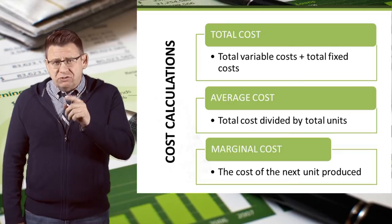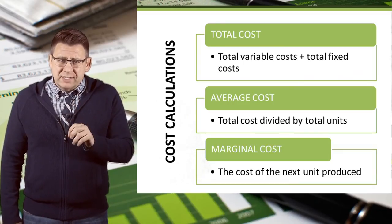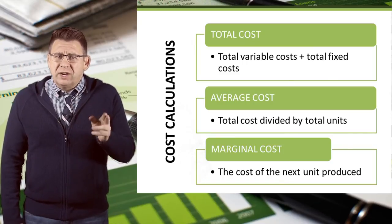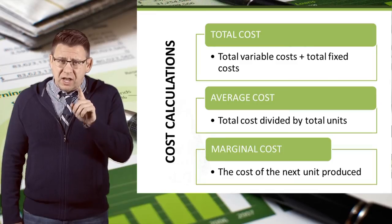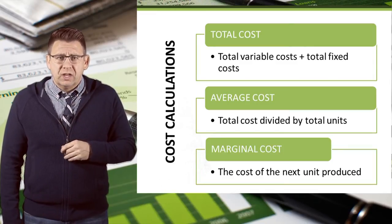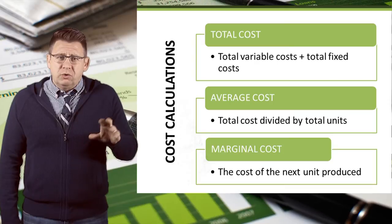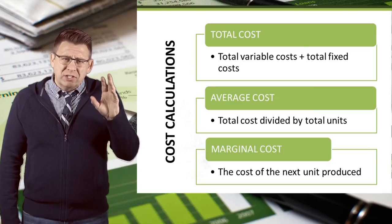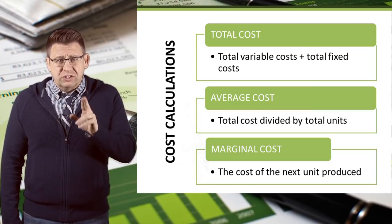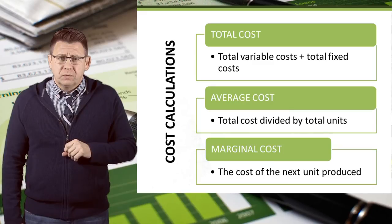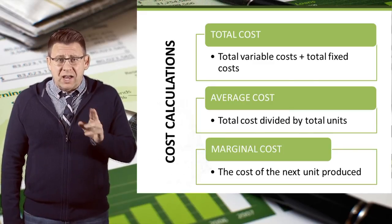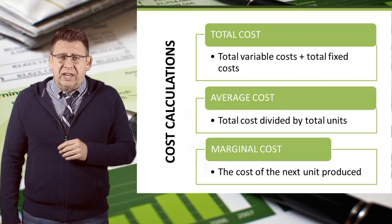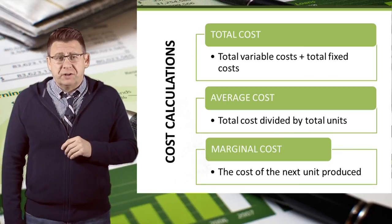Finally, some calculations to be familiar with. Total costs consist of fixed plus variable costs — whenever we talk about total costs, we mean fixed costs plus variable costs. Average cost is when you divide the total cost by the number of units; this number is only relevant to decisions made at that level of volume. Finally, marginal cost is the cost of making one additional unit. Since total fixed costs don't change, the marginal cost is really the same as the variable cost.